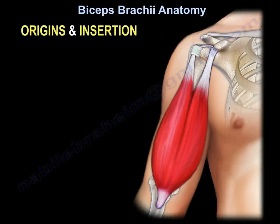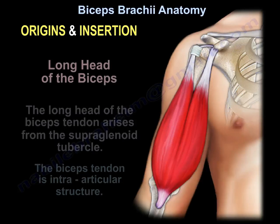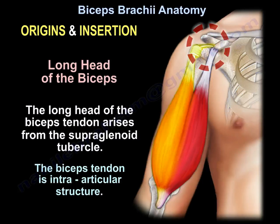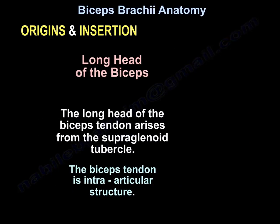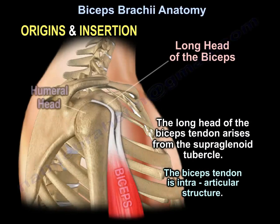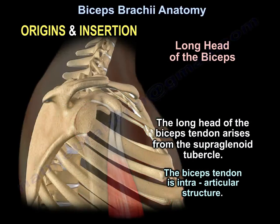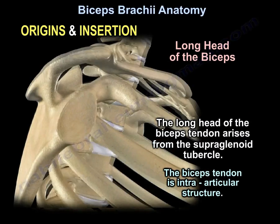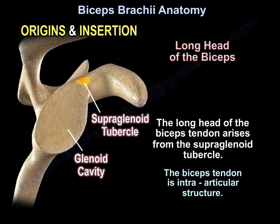Origin and insertion. The long head of the biceps tendon arises from the supraglenoid tubercle. The biceps tendon is an intra-articular structure.